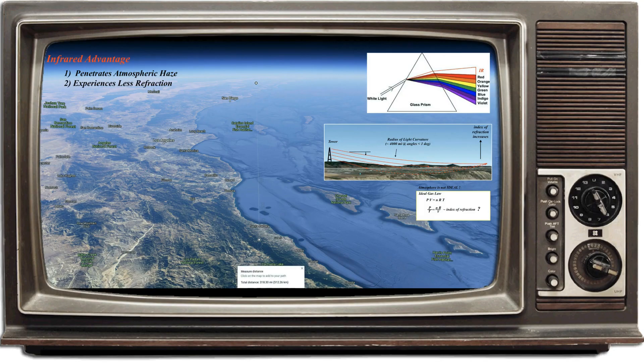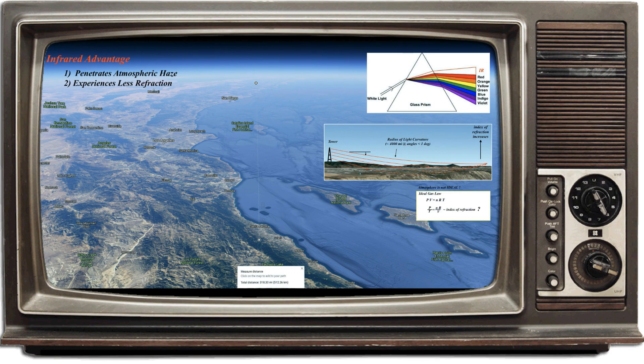Alright, claim number two is that we can see further with infrared because it refracts less. But the second benefit is more important. Infrared is less affected by refraction, this upward refraction that limits our visibility on the flat earth, and that's why we can see that much farther in infrared. You know, if you look at the photo with the prism, the longer wavelengths bend less.